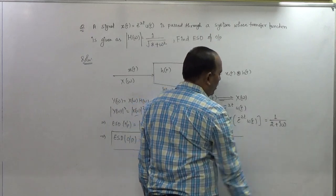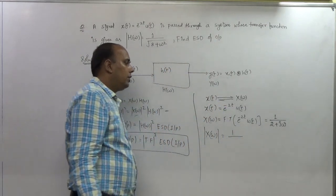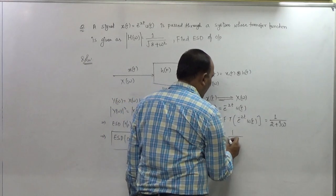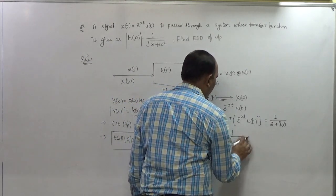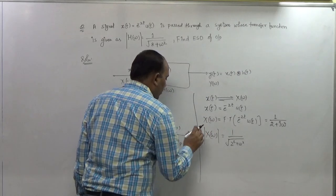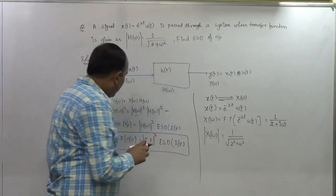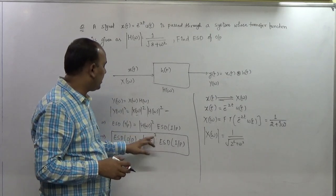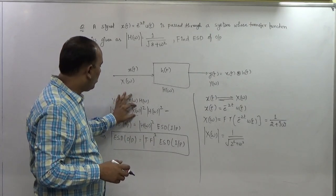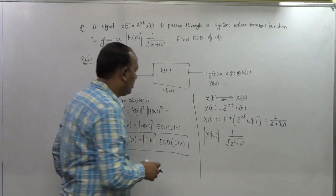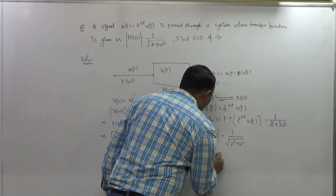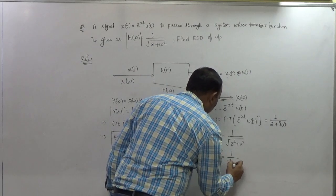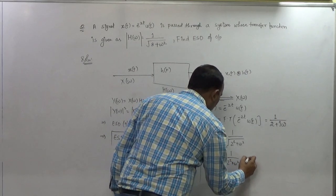The mod of X(ω) = 1/(2 + jω) involves a complex function with real and imaginary parts, so its magnitude is the square root of (real part)² + (imaginary part)². Taking the square to get the energy spectral density of the input: |X(ω)|² = 1/(4 + ω²). This is the energy spectral density of the input.